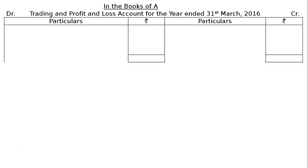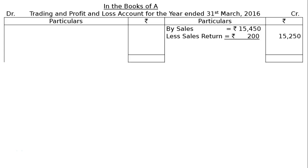On the credit side, we write sales rupees 15,450 less sales return rupees 200, giving a final column figure of rupees 15,250. Then by closing stock rupees 3,250. Closing stock is an adjustment and will be shown under the head current assets on the asset side of the balance sheet.